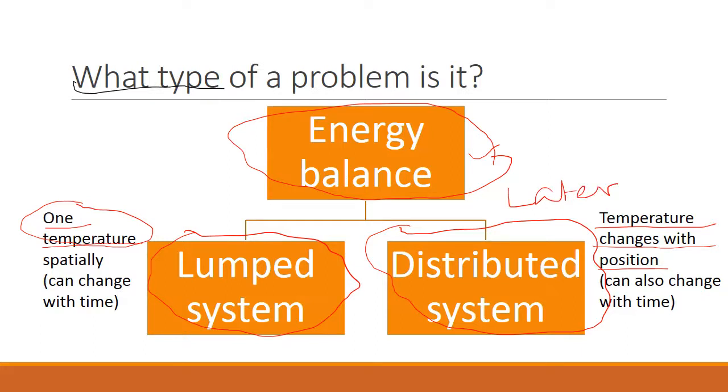So it is this distributed system that most of the course is about. So we are going to do these problems that are more involved later on. For now, we are talking about systems that we can deal with that has just one temperature. And you notice that in this problem, it's always talking about one temperature. What is the room temperature? So this is kind of a lumped system that is simpler.